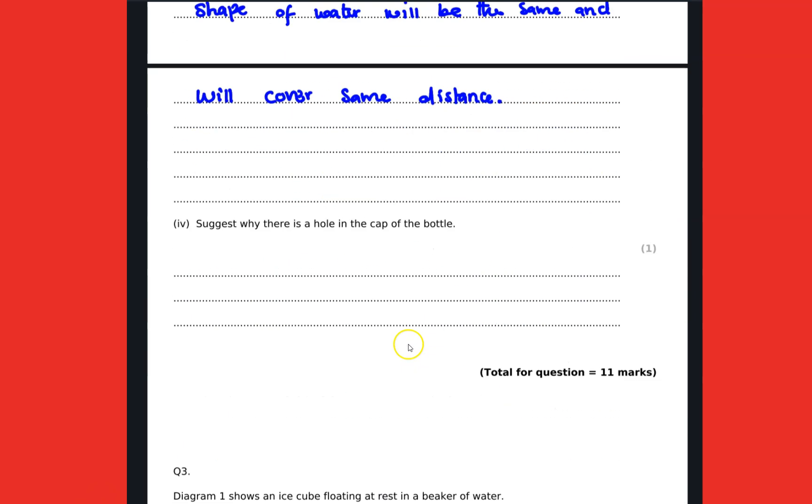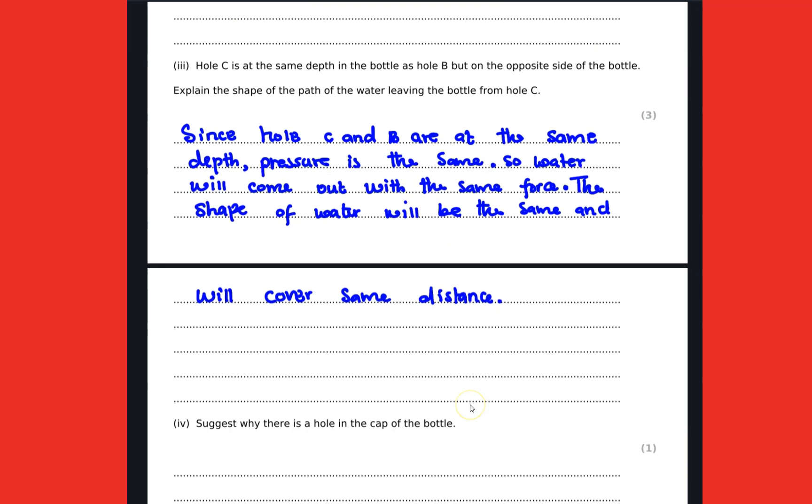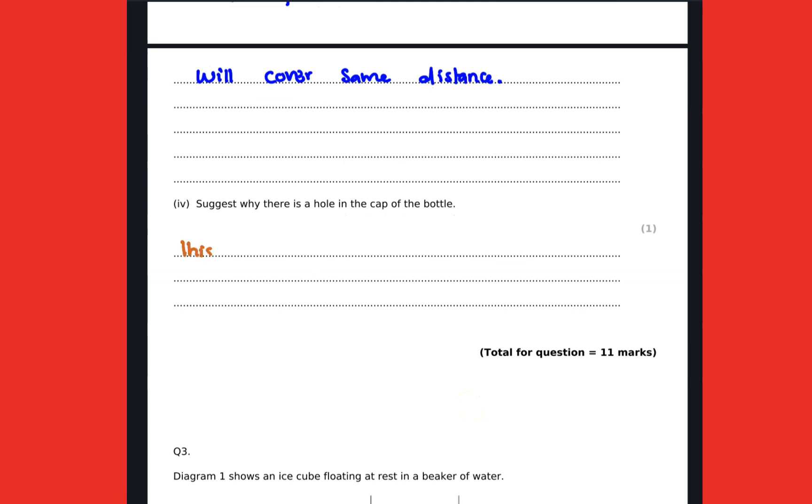Diagram one shows an ice cube floating at rest in a beaker, so it's not moving up or down, at rest, meaning the resultant force is zero. State the value of the resultant force at that point. So since it's not moving, the resultant force at that point is actually zero.